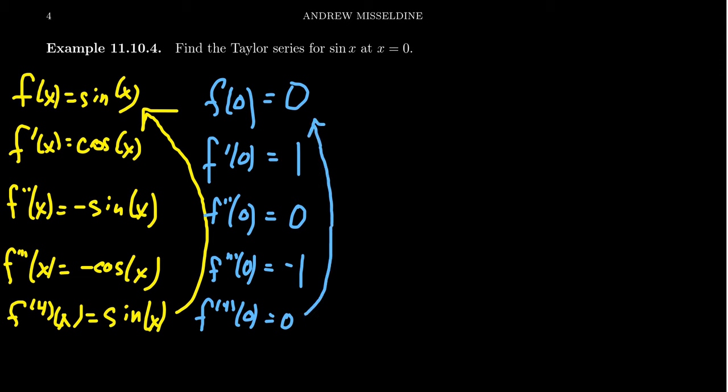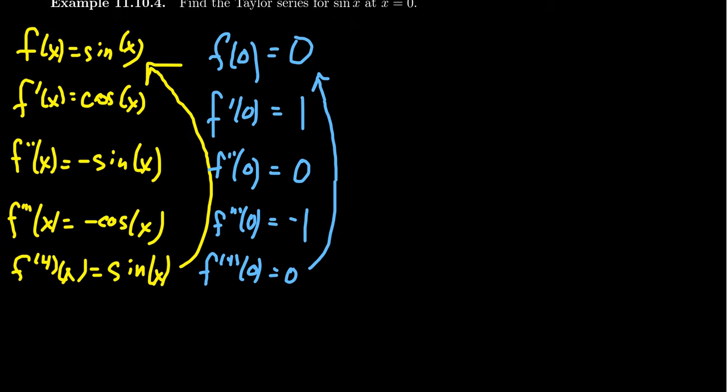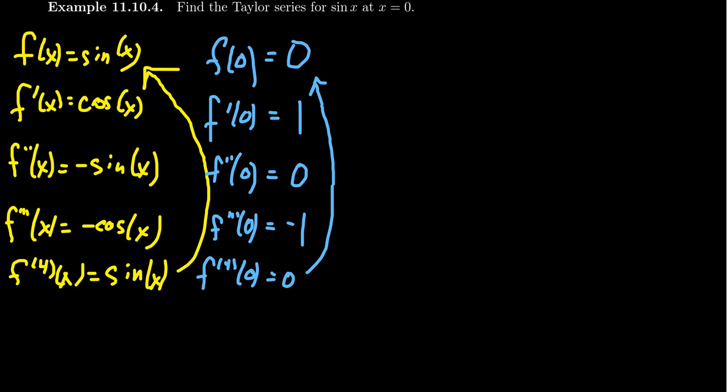The coefficients are always going to look like 0, 1, 0, negative 1, 0, 1, 0, negative 1, and so on — repeating over and over again.